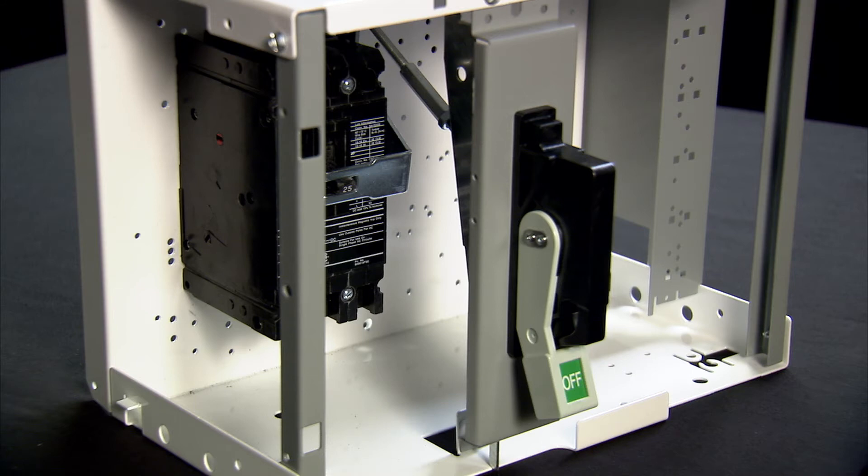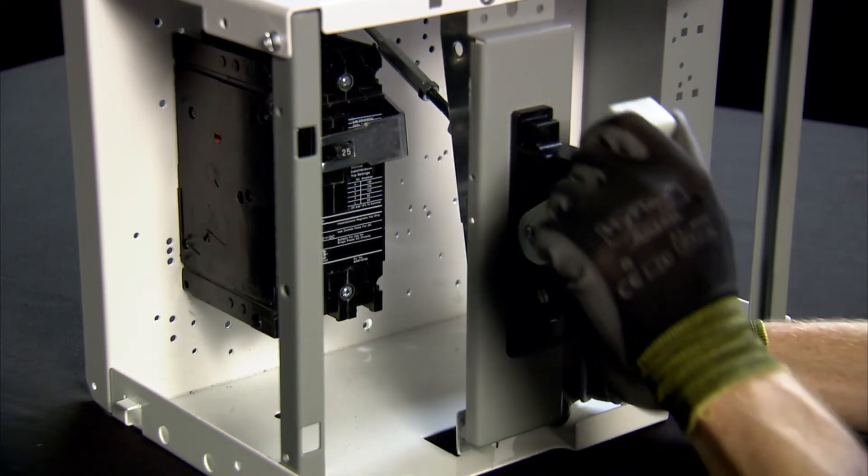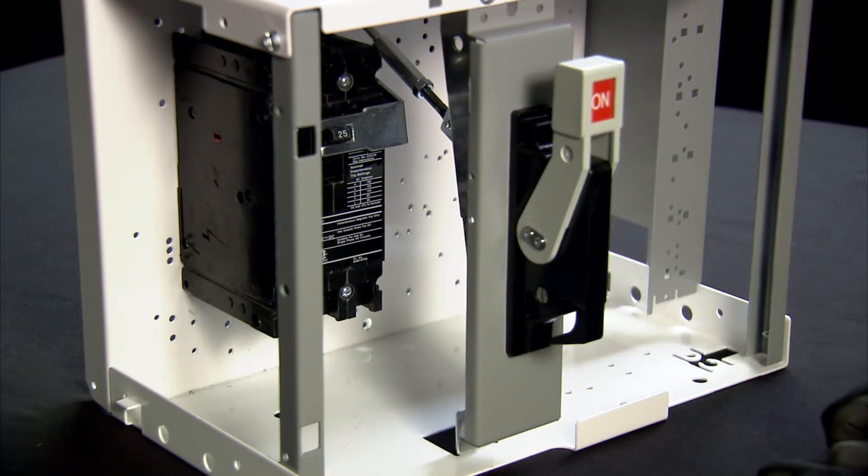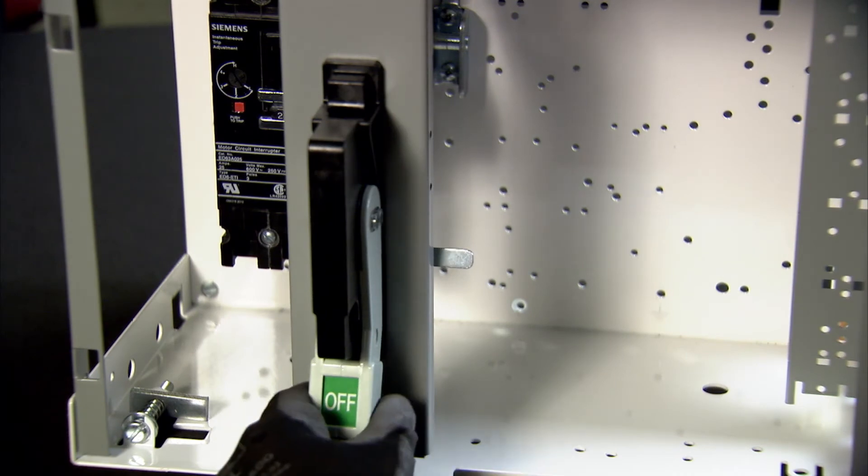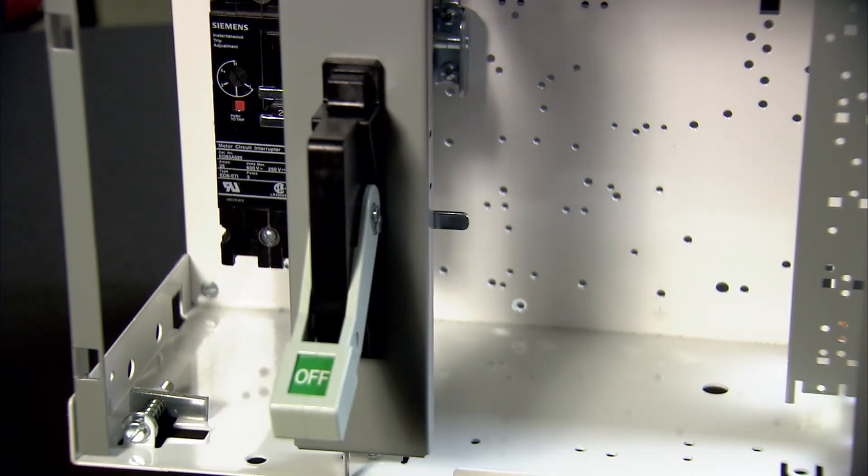Before making any adjustments to the handle, remove the unit from the motor control center or put it in the test position. The handle is properly adjusted if moving the handle from the off to the on position switches the breaker into the on position. Note that in order to perform this operation while the unit is removed from the motor control center,